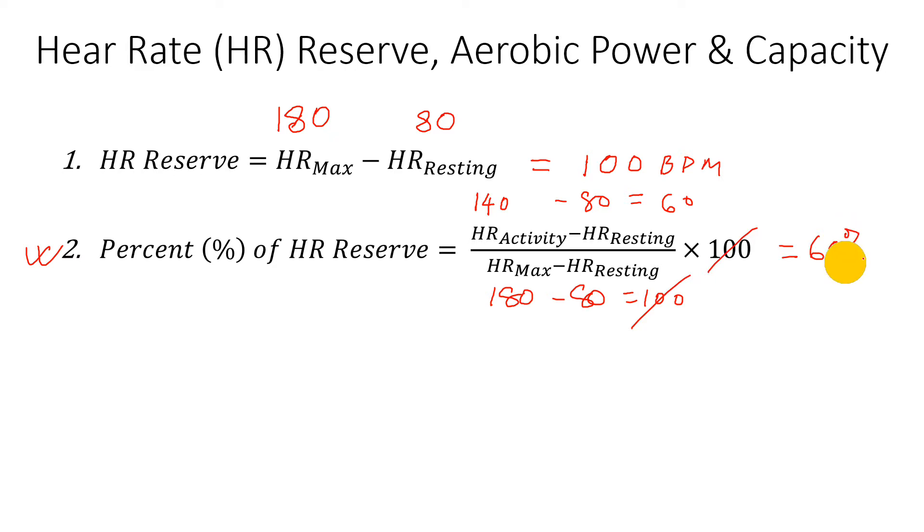60 percent is the percent of maximum aerobic power or capacity or percent of heart rate reserve if the person works at a rate of 140 beats per minute.